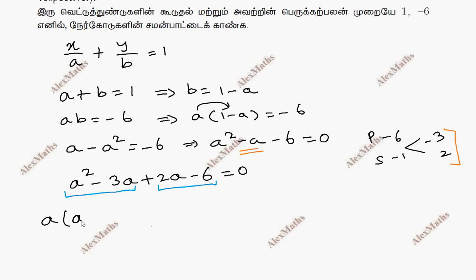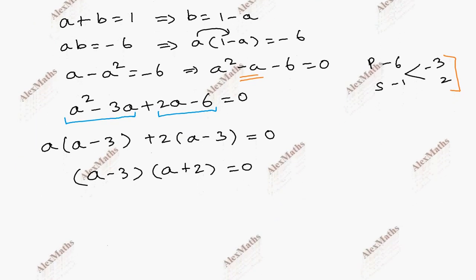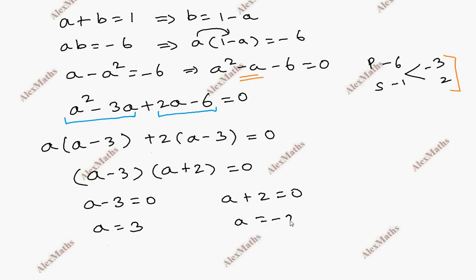Factoring: a minus 3 into a plus 2 equal to 0. So a minus 3 equal to 0 gives a equal to 3, and a plus 2 equal to 0 gives a equal to minus 2.